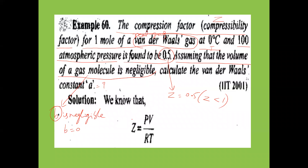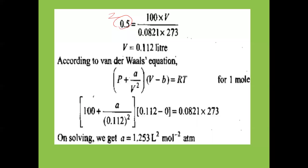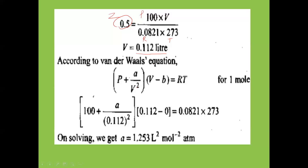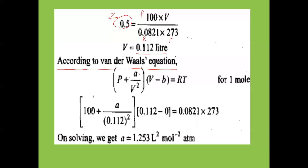We know that Z = PV/RT for one mole (n=1). Z equals P times V divided by nRT, where R is 0.0821 and T is temperature in Kelvin. The volume is 0.112 liters. According to Van der Waals equation: (P + a/V²)(V - b) = RT.